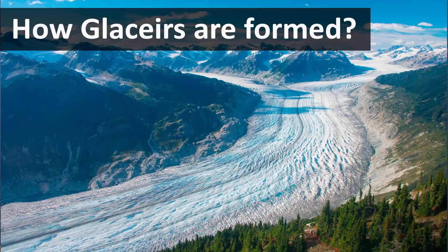In this video, we will learn how glaciers are formed. Glaciers begin to form when snow remains in the same area for a very long time — an entire year. This way, each year a new layer of snow is formed on top of previous layers.